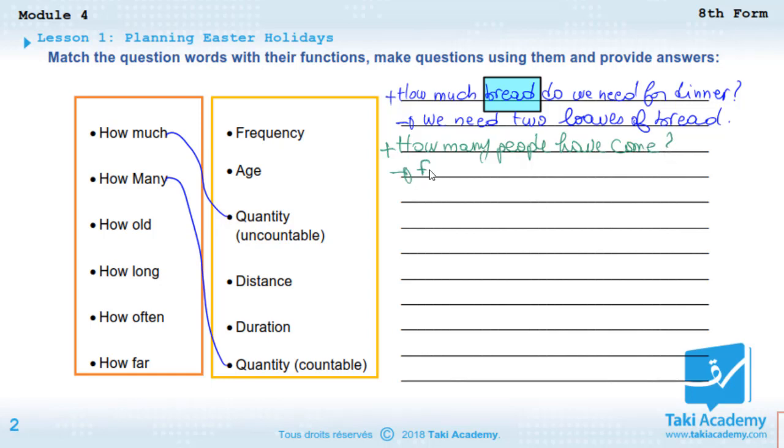How old is used to ask about age, of course. For example, I can say, 'How old is your dog?' You can tell me, 'It's two years old.' Now, how long is used to ask about duration.